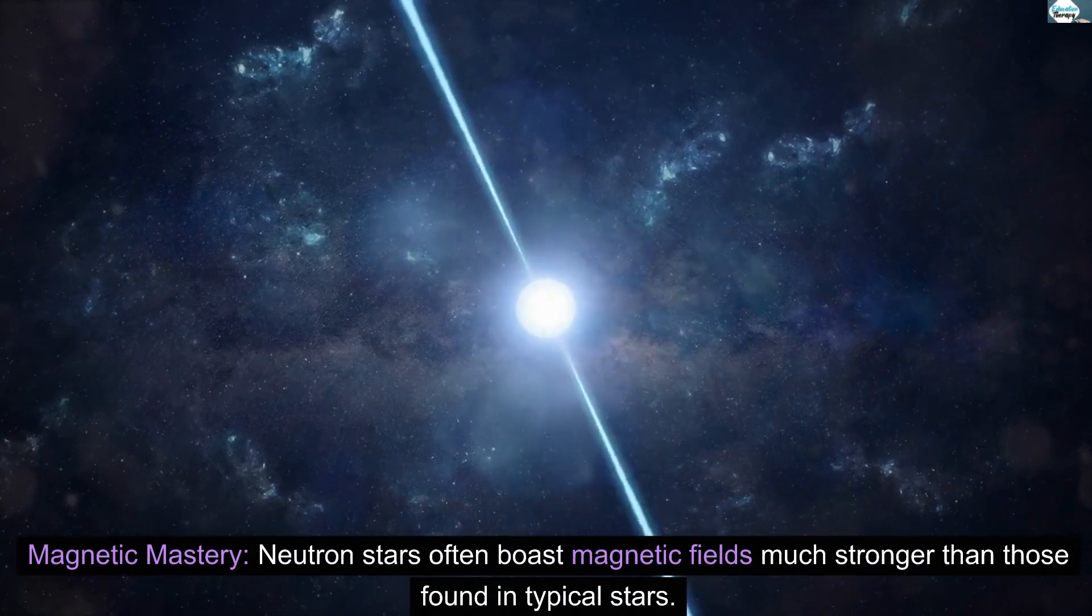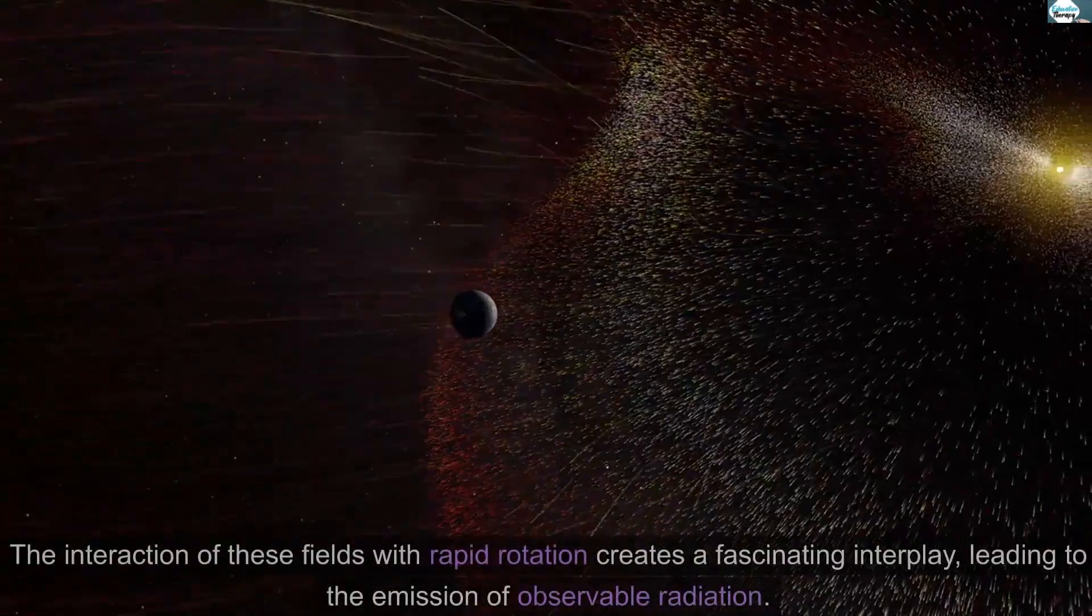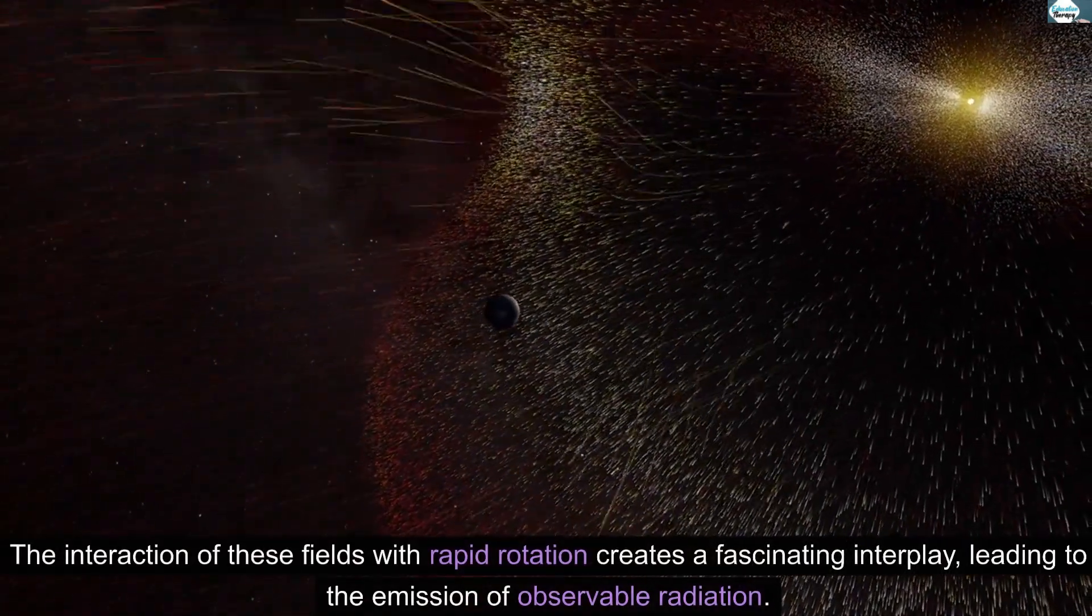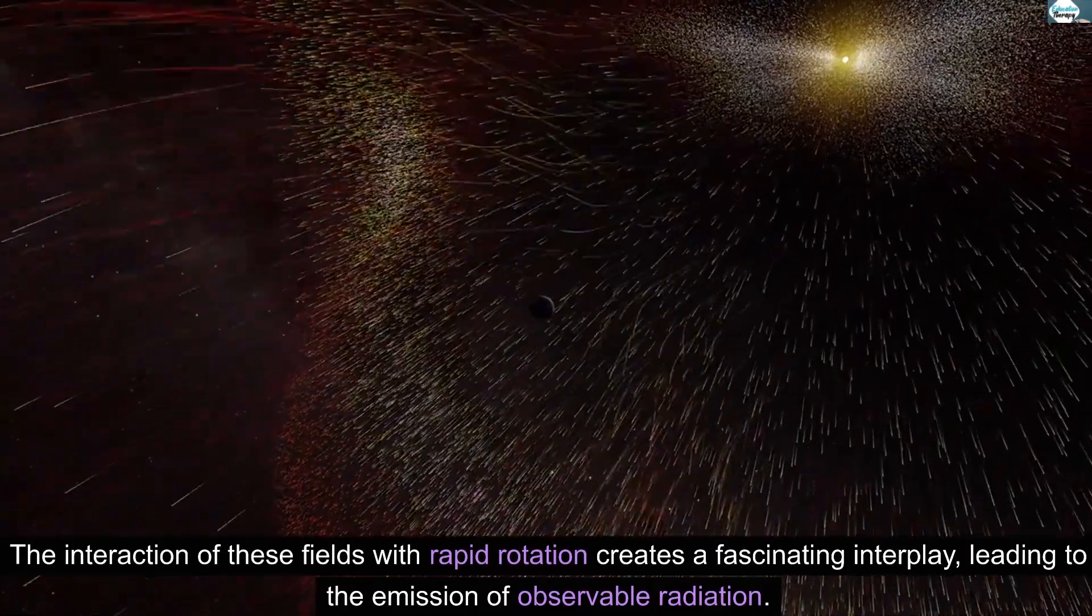Magnetic mastery. Neutron stars often boast magnetic fields much stronger than those found in typical stars. The interaction of these fields with rapid rotation creates a fascinating interplay, leading to the emission of observable radiation.